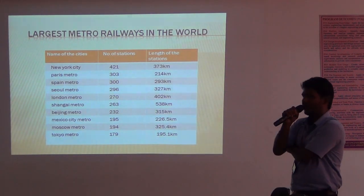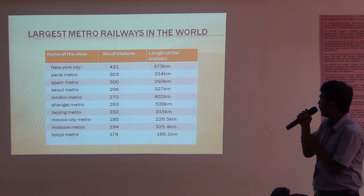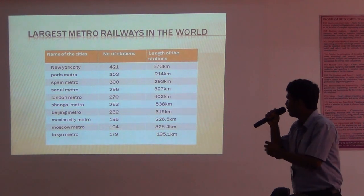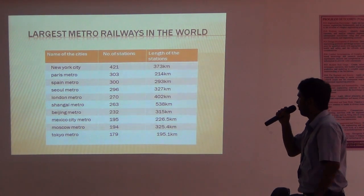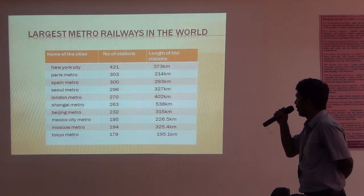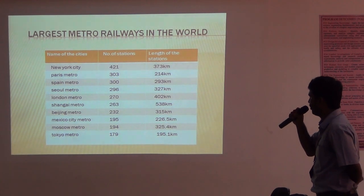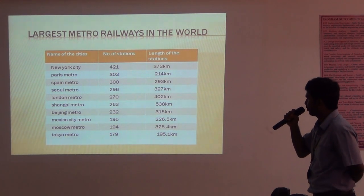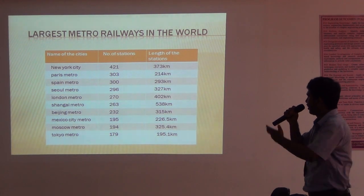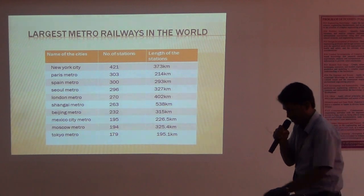By this table, we can observe the largest Metro Railways in the world. The names of the cities are: New York, Paris, Spain, Seoul, London, Shanghai, Beijing, Mexico City, Moscow, and Tokyo. There are numerous stations and many other stations.